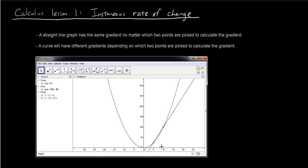So if I drag these two points, you'll see that the gradient of the straight line joining them changes, the slope of the straight line joining them changes. So it depends on which two points are picked to calculate the gradient. Alright, so for a curve, the gradient is always changing.